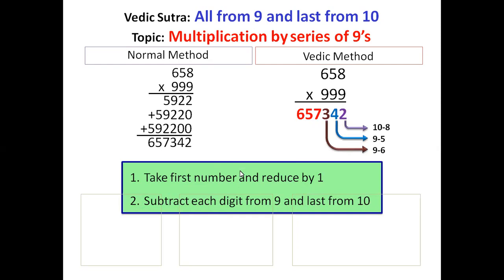Second part of the answer is subtract each digit from 9 and last from 10. 9 minus 6 is 3. 9 minus 5 is 4. And last from 10, 10 minus 8 is 2.